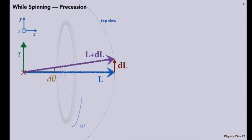So it looks like, well, it looks like L is changing its direction by a little angle d theta. Go figure out what d theta needs to be in terms of L and tau.